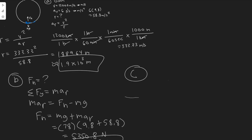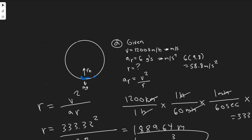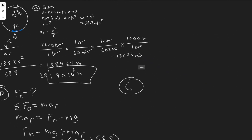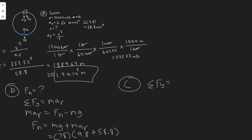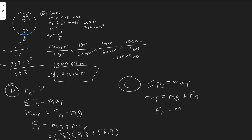For part C, we do the same thing but at the top of the circle. The free body diagram changes here: both mg and F_N now point downward, because the seat is above the pilot pushing down on him. Summing forces with inward as positive: m times a_r equals mg plus F_N. Solving for F_N gives: F_N equals m times a_r minus mg.